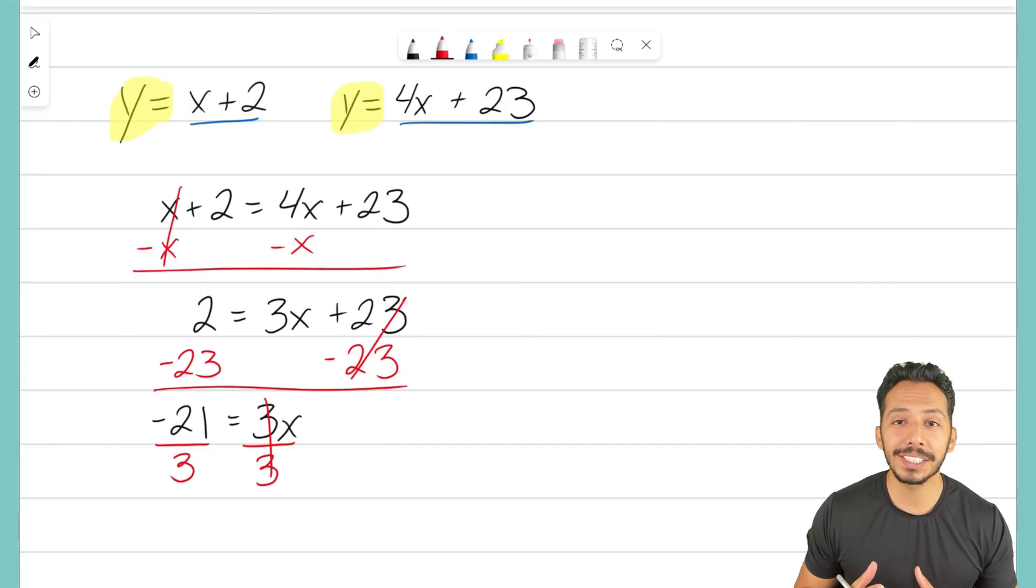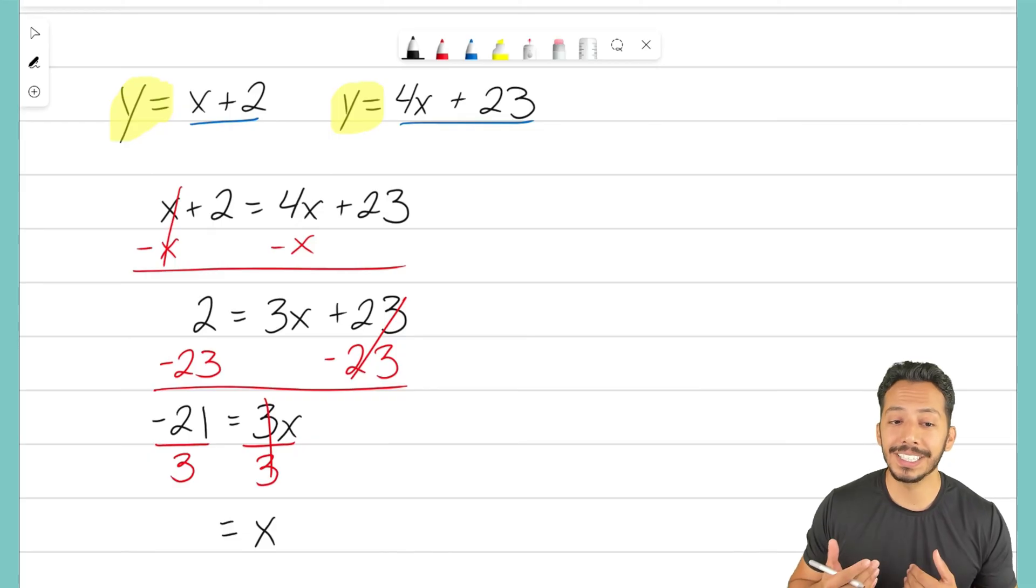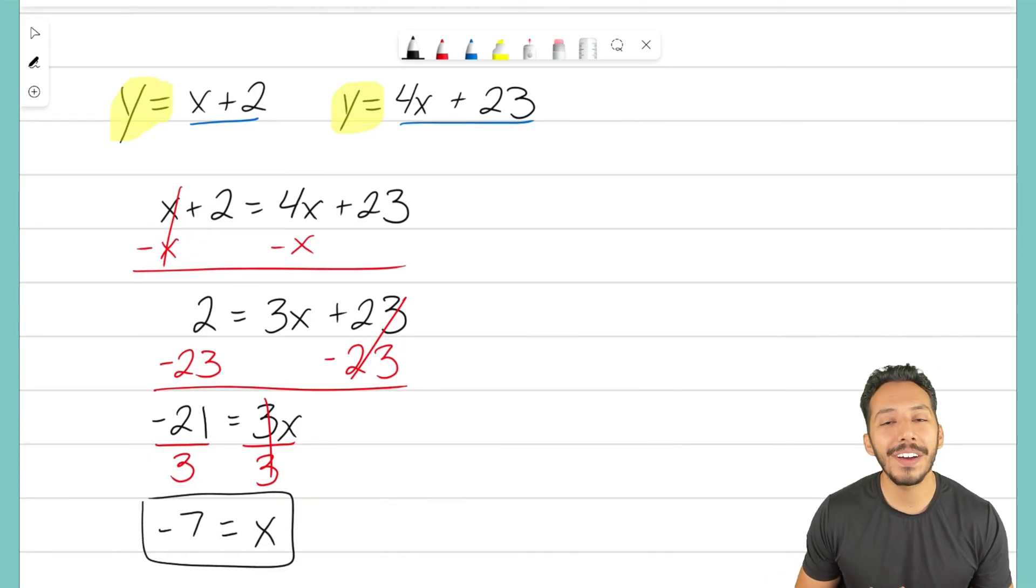Doing that, 3x divided by three is going to cancel out those threes, leave us with just x equals, and negative 21 divided by three gives us negative 7. That right there shows you that we have our x term is negative 7.